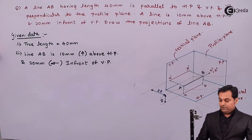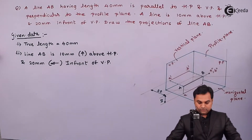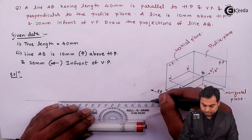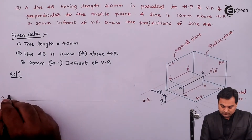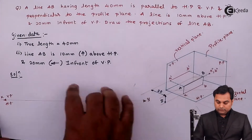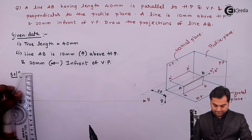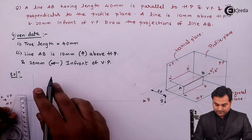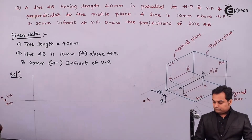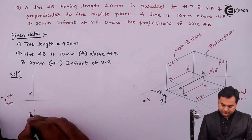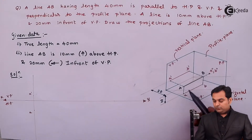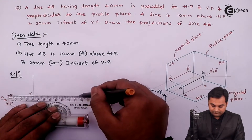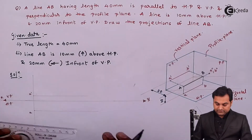Now that we understand the conditions, I'll start the solution. Drawing the XY line for VP and HP. The line is 10 mm above HP, so I'm drawing a light vertical line. Marking 10 mm above HP and 20 mm in front of VP — this gives point A-dash and point A. Since the line is parallel to both HP and VP, it is not inclined, so it will appear as a straight horizontal line.